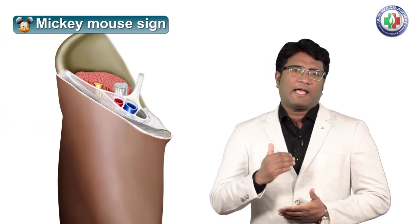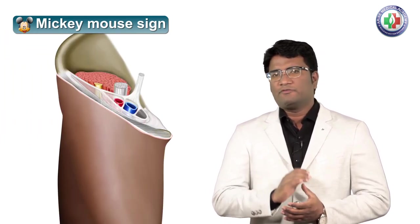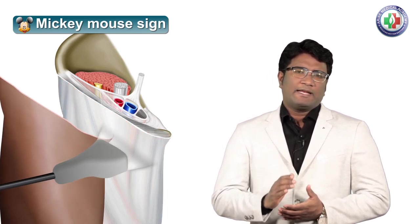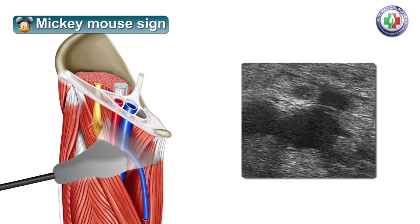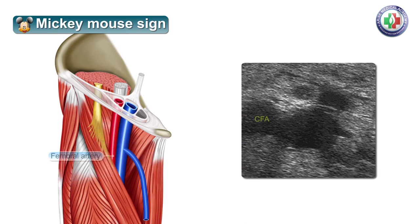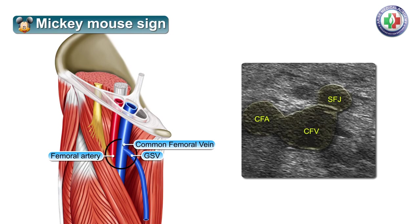The next place where we encounter the Mickey Mouse sign is at the anterior aspect of the thigh at the region of the groin. On short axis ultrasound at the anterior aspect of the thigh at the level of the groin, the arrangement of the femoral vessels — the femoral artery, the common femoral vein, and the opening of the great saphenous vein at the saphenofemoral junction — takes the appearance of a Mickey Mouse. This normal appearance of the femoral vessels at the level of the groin on ultrasound gives the Mickey Mouse appearance.